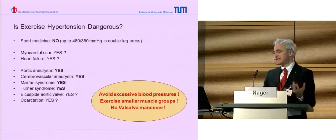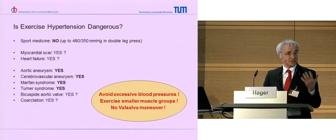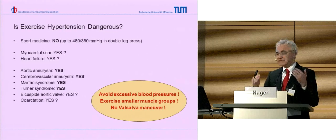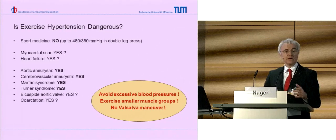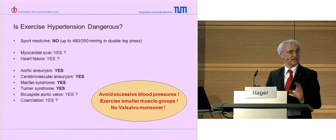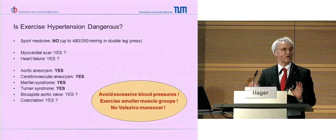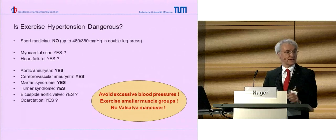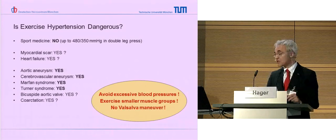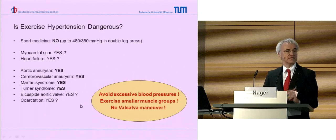Maybe we should avoid excessive blood pressure - but we can do that. Just refrain the patient from doing strength training on big muscle groups. For example, for the legs, train only one leg and after 10 minutes train the other one. Blood pressure does not rise if you have only one leg moving. You will only get a high blood pressure if you have big muscle groups working, especially if you add a Valsalva maneuver. You can manage this and allow them for training, but you have to advise them how to train.